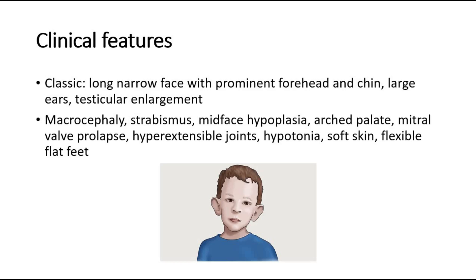These features are typically not obvious until adolescence or adulthood. Physical features in younger males may include macrocephaly, strabismus, midface hypoplasia, high arched palate, mitral valve prolapse, hyperextensible joints, hypotonia, soft skin, and flexible flat feet.